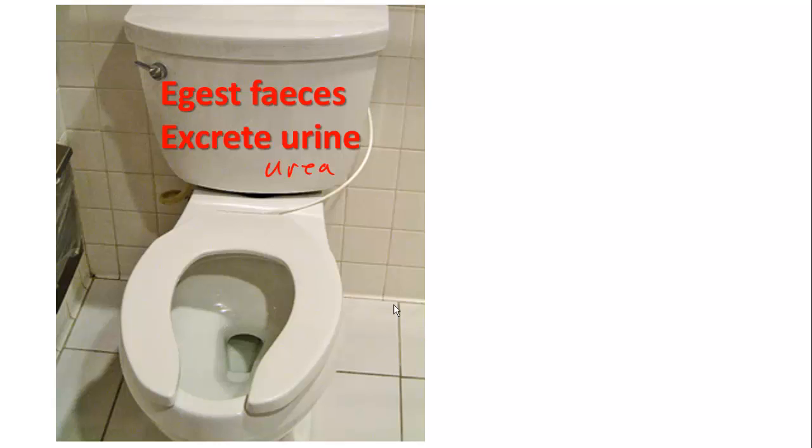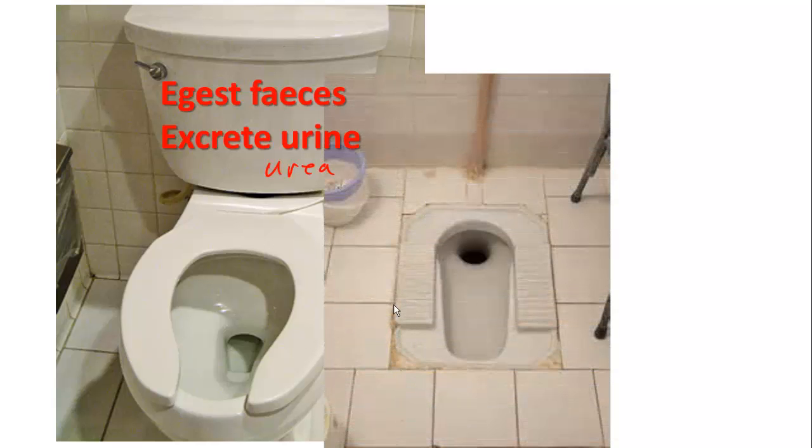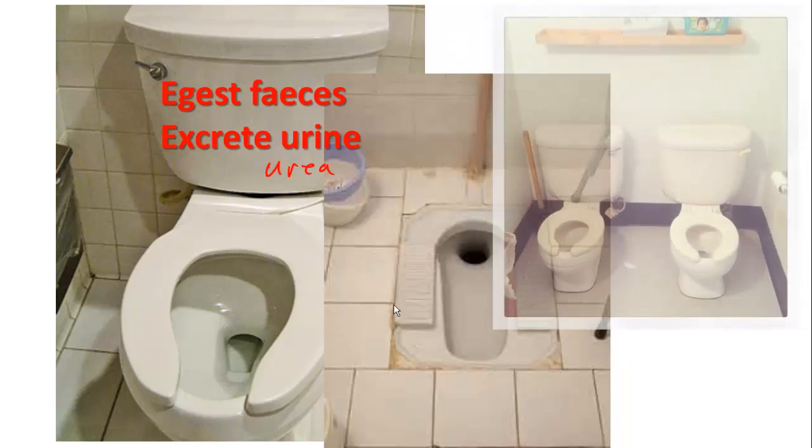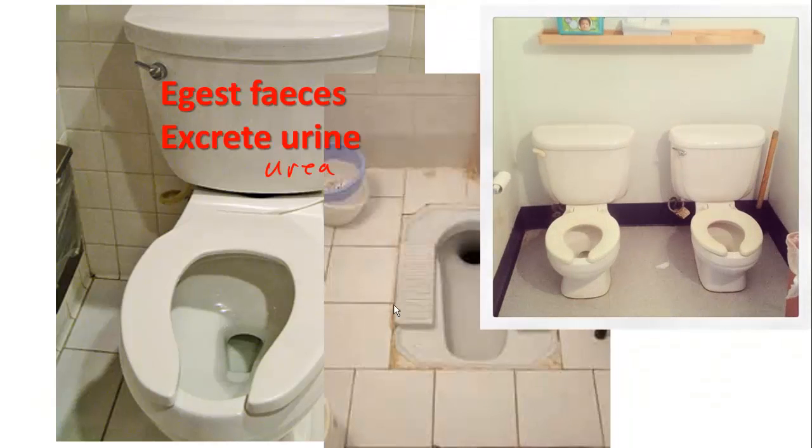Nonetheless, we produce faeces via egestion and urine via excretion, and we may use one of these, or maybe your toilet is one of these—an attractive little squat and drop number—or maybe you prefer this kind of arrangement. Maybe you're a friendly soul and you like going to the loo with a friend, or maybe you like a choice when you go to the loo.